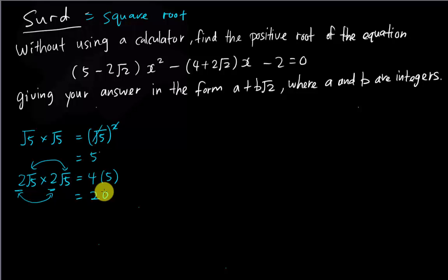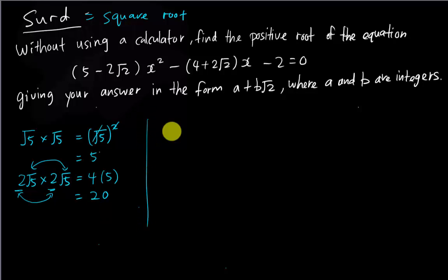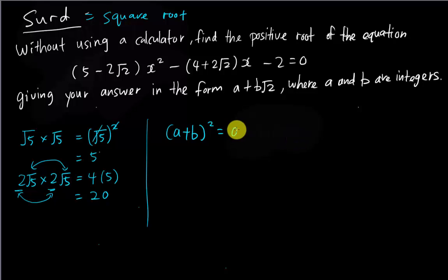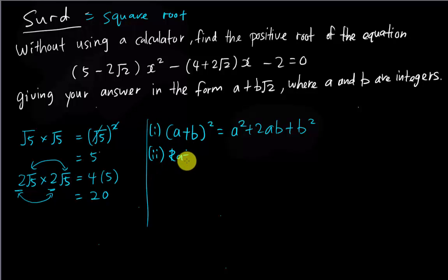I hope you understand the surd basics because later when I do this question I will expand things quite fast. Two fundamental formulas in this chapter: first is (a + b)² which equals a² + 2ab + b². This is a very important formula in this chapter.